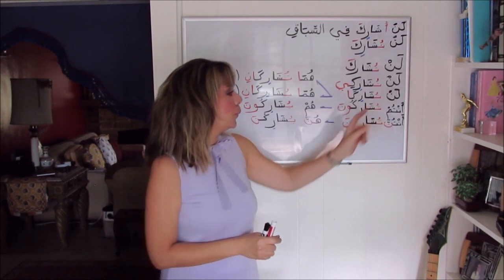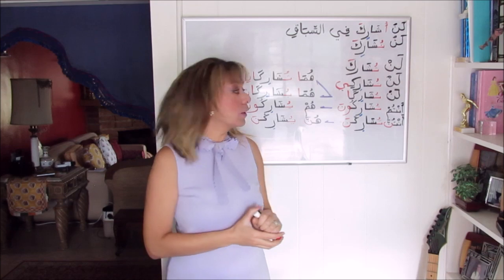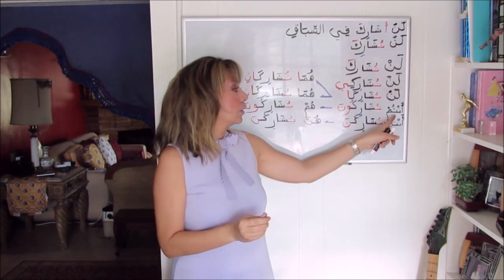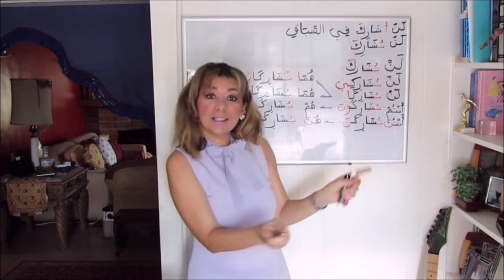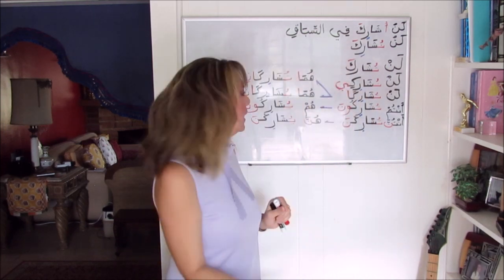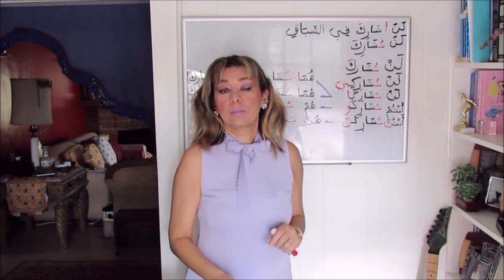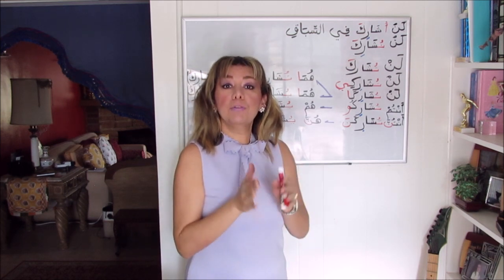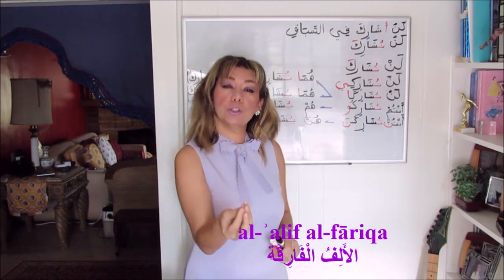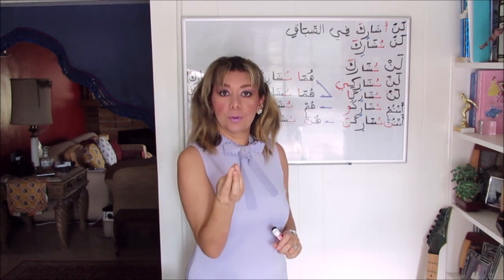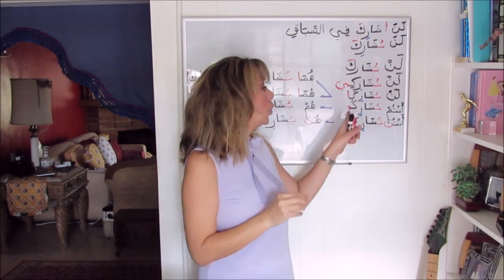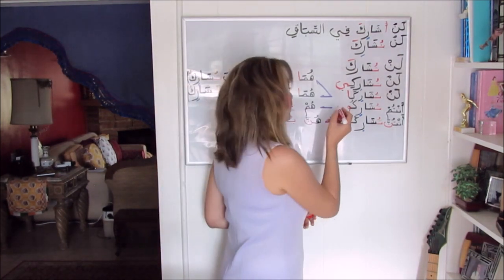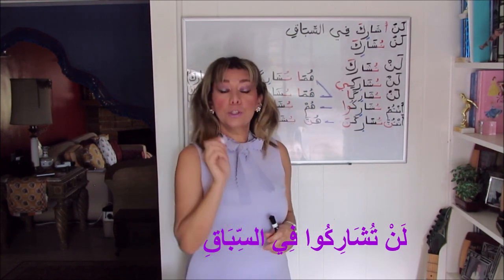For أنتم, second person masculine plural: the form is تُشاركون. The waw is the plurality marker — the subject marker for أنتم. We have the noon, so the noon will be omitted. But we also have to add a distinguishing alif — alif al-fariqah — to differentiate it from the original waw that belongs to the verb as its third radical. So the collective waw, or plurality waw (waw ul-jama'ah), must be followed by this alif after the omission of the noon: لن تُشاركوا في السباق.